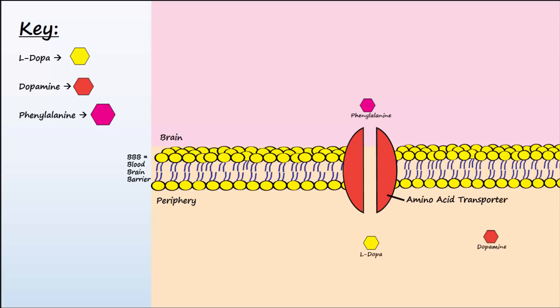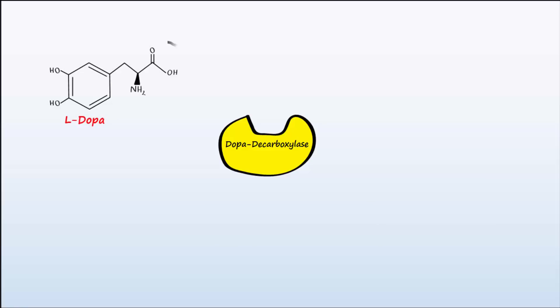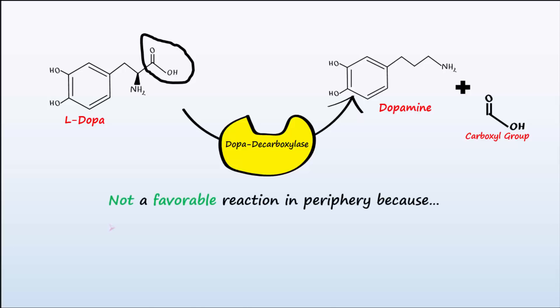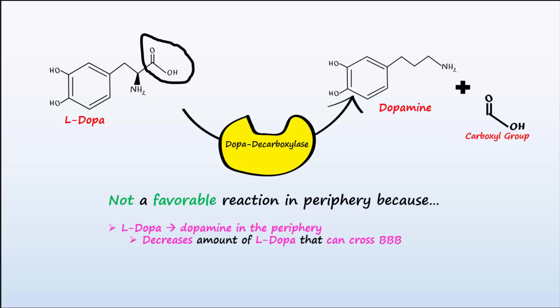There are two main enzymes that break down L-DOPA in the periphery. The first is called dopa decarboxylase, which removes a carboxyl group from L-DOPA, turning it into dopamine. This is not a favorable reaction in the periphery because when L-DOPA is converted into dopamine peripherally, this decreases the amount of L-DOPA available to cross the blood-brain barrier. Dopamine itself is unable to cross the blood-brain barrier — it must be made in the brain. Also, dopamine in the periphery increases side effects like nausea, vomiting, and tachycardia.